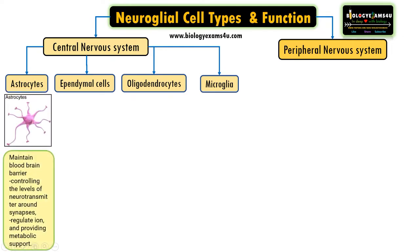Astrocytes — as you can see, these are star-shaped cells, which is why they are called 'astro.' They are responsible for maintaining the blood-brain barrier. They control the levels of neurotransmitters around synapses. They also play a critical role in regulating ion concentration, such as potassium ion concentration, and provide metabolic support — including glucose or energy supply to neurons.